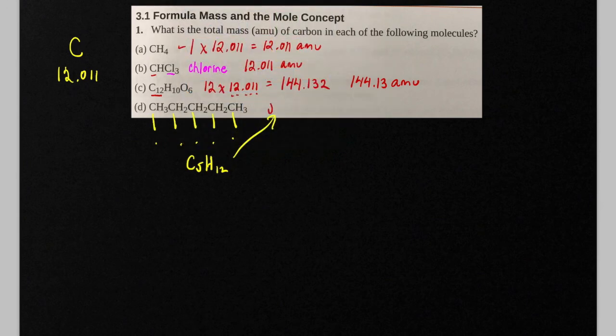So anyways, let's go ahead and do that. Five times 12.011 is going to be equal to 60.055 AMU.